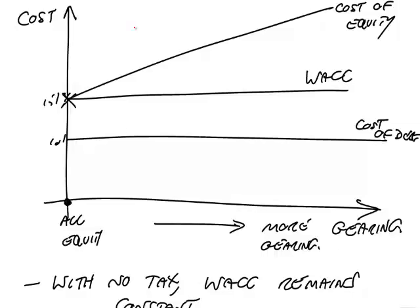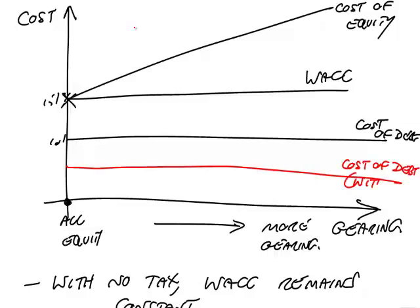In theory, since debt is risk-free, the cost of debt should be more or less constant regardless of gearing level. Without tax, the extra cost of equity was cancelled out by the cheapness of the debt. But if you make debt even cheaper because it gets tax relief, surely the cheapness of the debt is going to more than cancel the extra cost of equity. And they proved that as a result, the weighted average cost of capital will fall with higher gearing.